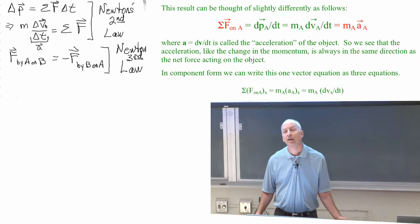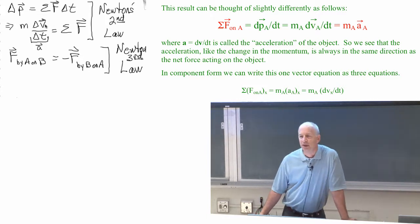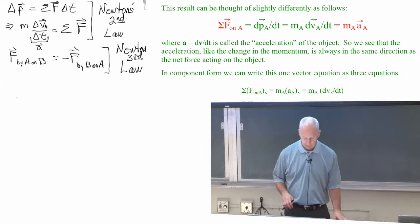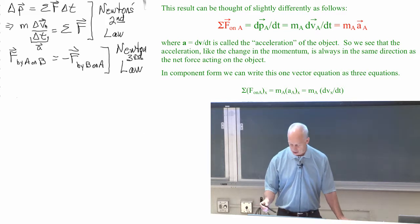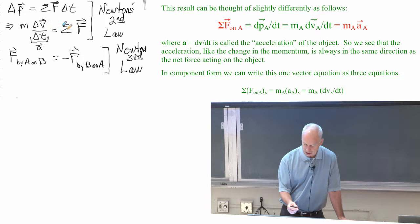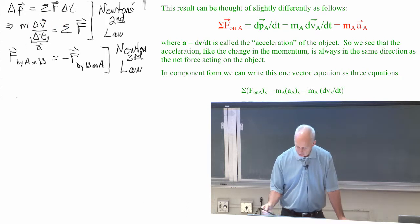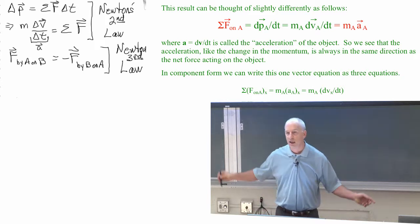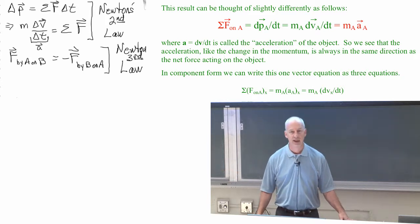Acceleration is a vector. Acceleration vector points in the direction that the velocity is changing. So you've seen Newton's second law before in this guise. And now we're going to change it a little bit and write it in a slightly different form. The net force on object A is the mass of object A times the acceleration vector for object A.